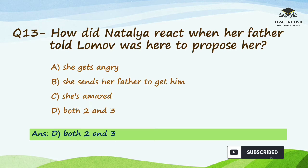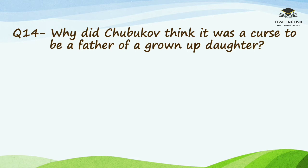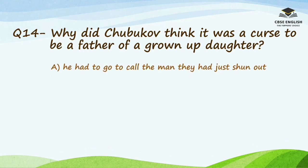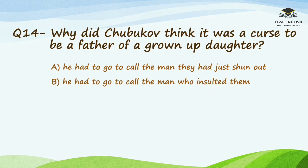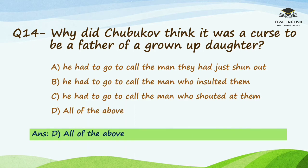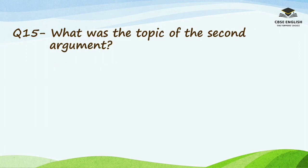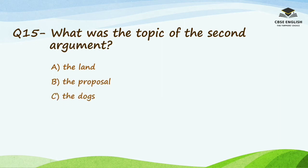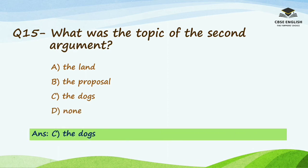That is, she sends her father to get him and she is amazed. Question number 14: Why did Chubukov think it was a curse to be a father of a grown-up daughter? Options are he had to go call the man they had just shunned out, the man who insulted them, the man who shouted at them, or all of the above. The right option is all of the above. Question number 15: What was the topic of the second argument? Options are the land, the proposal, the dogs, or none. The right option is the dogs.